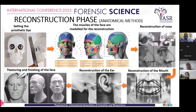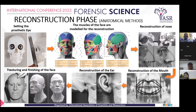Now we come to the reconstruction phase. First we will see the anatomical method. The first thing we have to do is set the prosthetic eye. From the front, the eye should be centered within the orbit. The axis of the cornea, when viewed from the normal front, sits at the junction of two lines: one drawn from the medial edge of the orbit to the lateral margin of the orbit, and the other line bisecting the orbit between the superior and inferior margin.